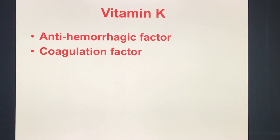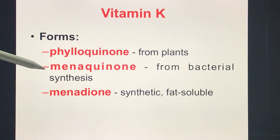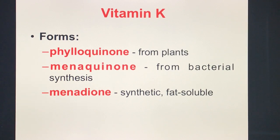The last fat-soluble vitamin is Vitamin K, also known as the anti-hemorrhagic factor and coagulation factor. Vitamin K exists in three forms: phylloquinone from plants (especially green leafy vegetables), menaquinone from bacterial synthesis, and menadione as the synthetic drug form.